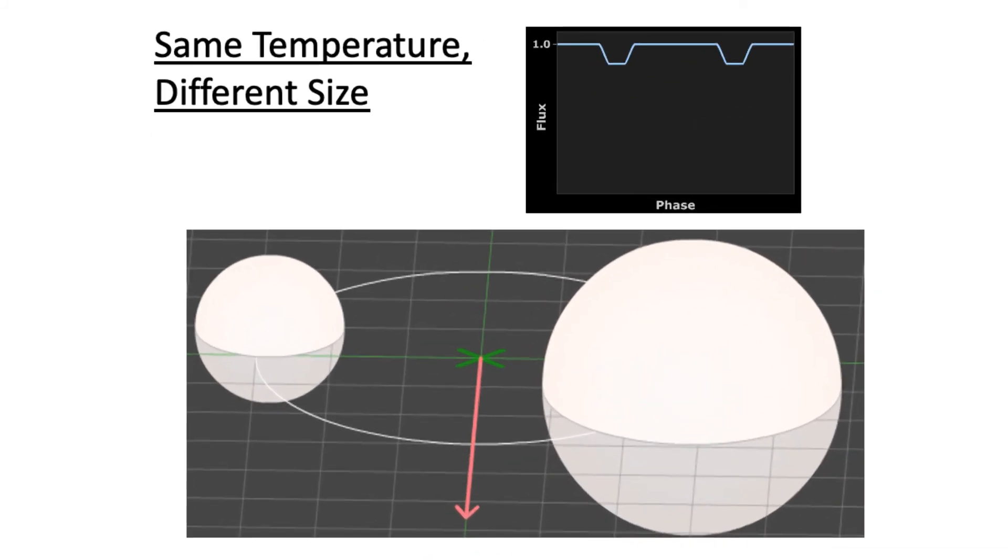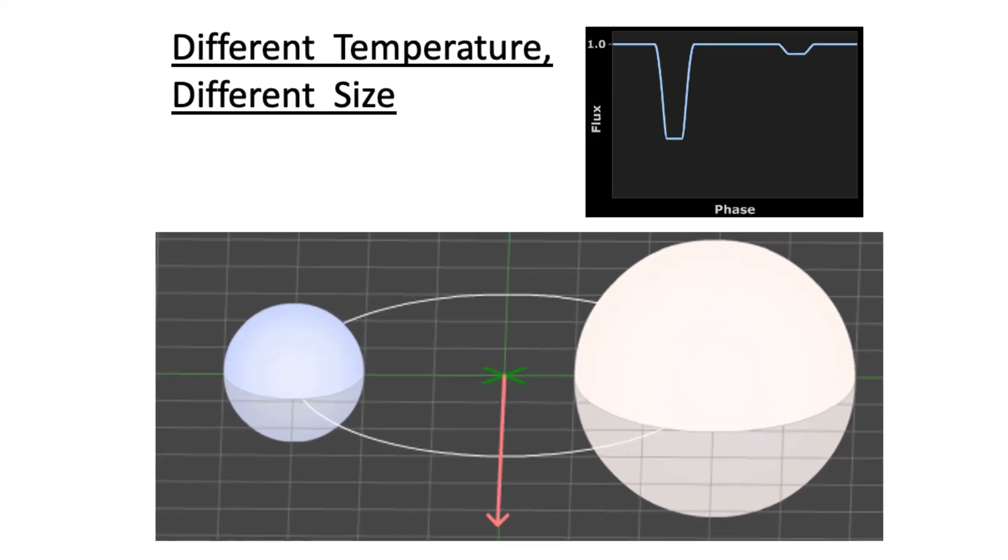Same temperature, different size, which gives us flat eclipses with the same depths. And different temperature, different size, which gives us flat eclipses with different depths.